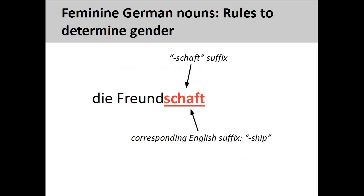Nouns ending in –schaft, such as 'Freundschaft,' meaning friendship, are always feminine. These endings usually have a corresponding English suffix, such as –ship.